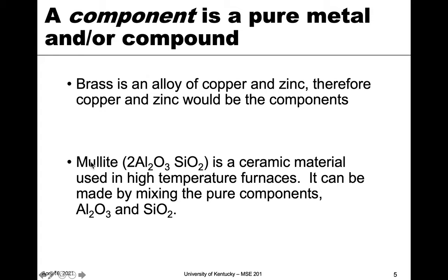If we're looking at a ceramic such as mullite, which has a chemical formula that is a blend of aluminum and silicon oxides, then the components are aluminum oxide (Al₂O₃) or SiO₂. So a component doesn't have to be an element — it can be a pure compound, as we see with ceramic systems.